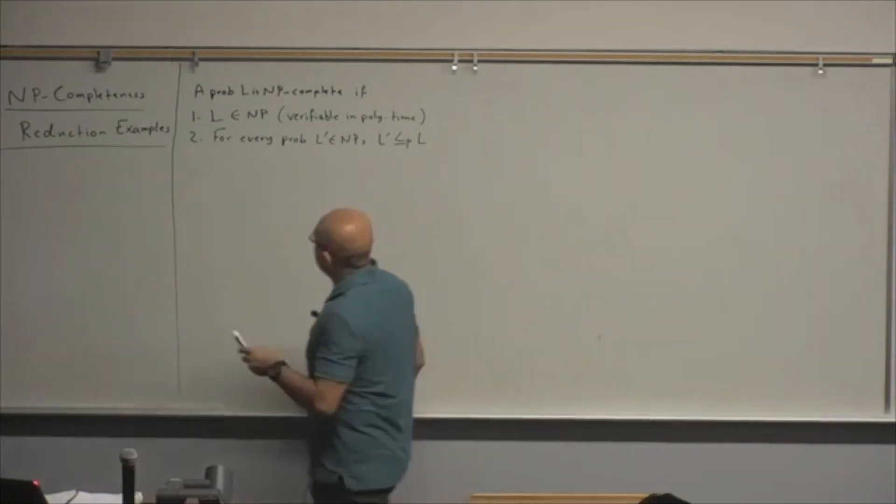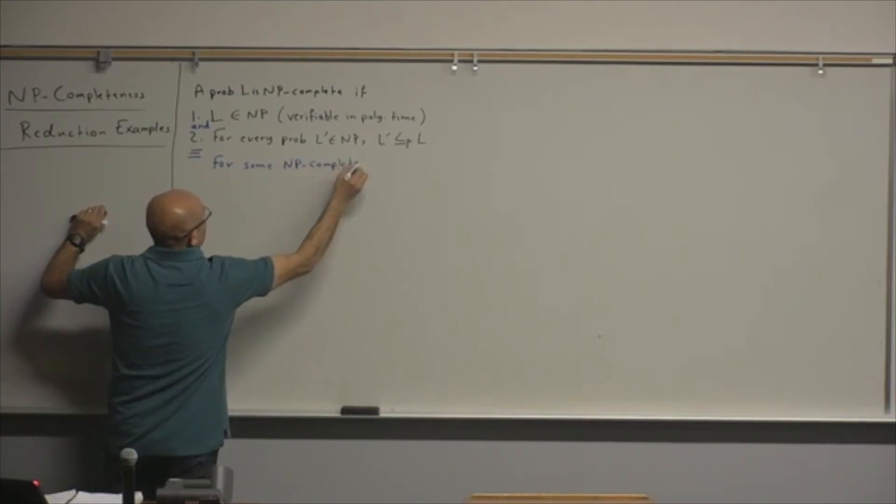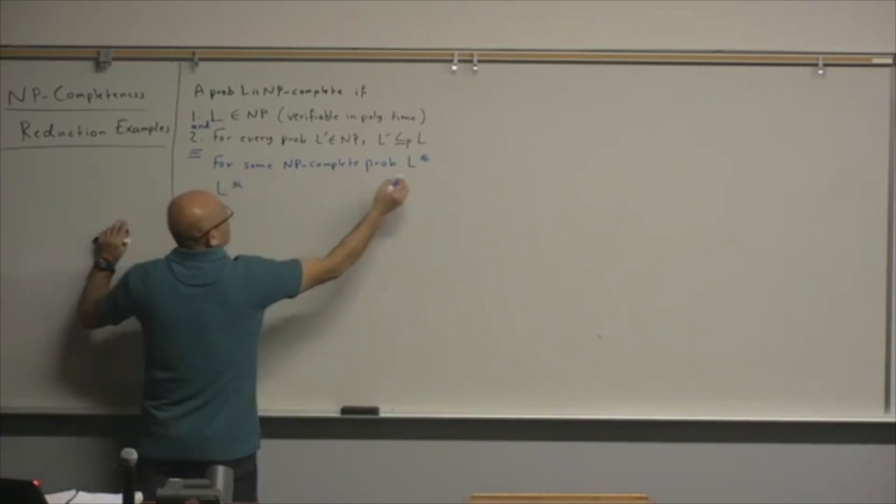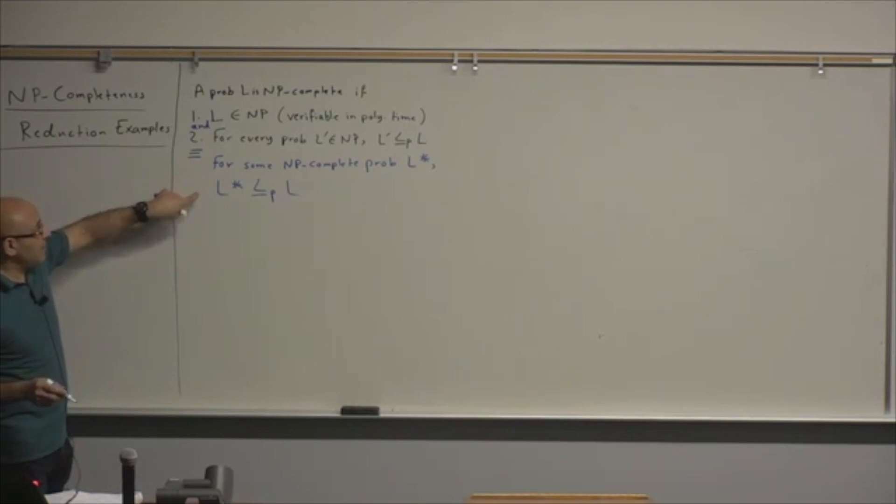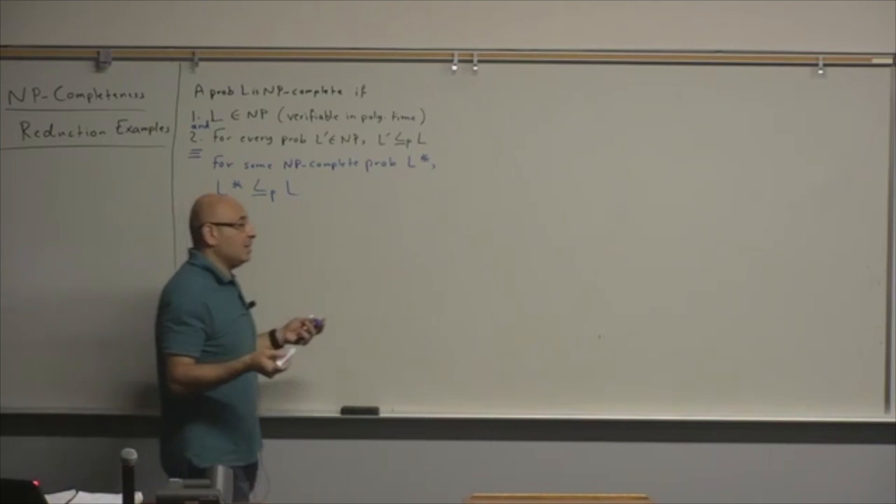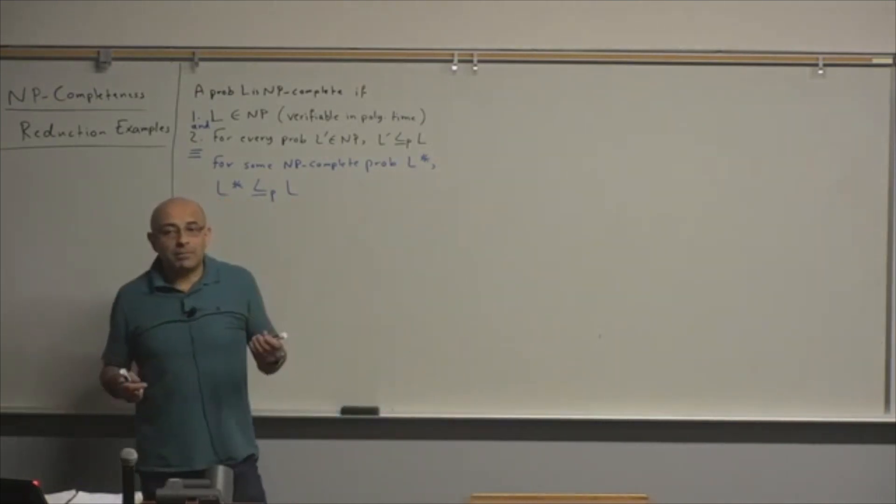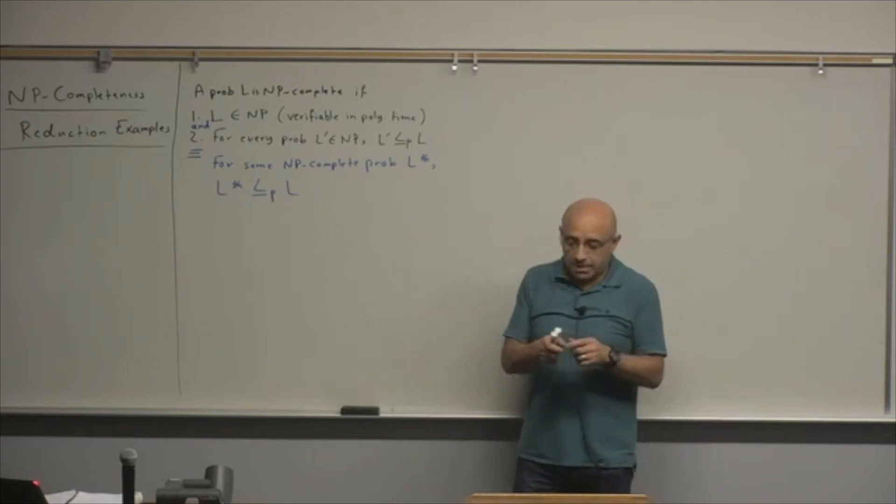So the equivalent condition for number two: for some NP complete problem L star, L star is polynomially reducible to L. This condition in blue is much easier to verify in practice because you only need to find one problem, and reducing one problem to another is easier than abstractly reducing an infinite number of problems to one problem. Especially if you can find a problem that's very similar to the problem that you are trying to prove.